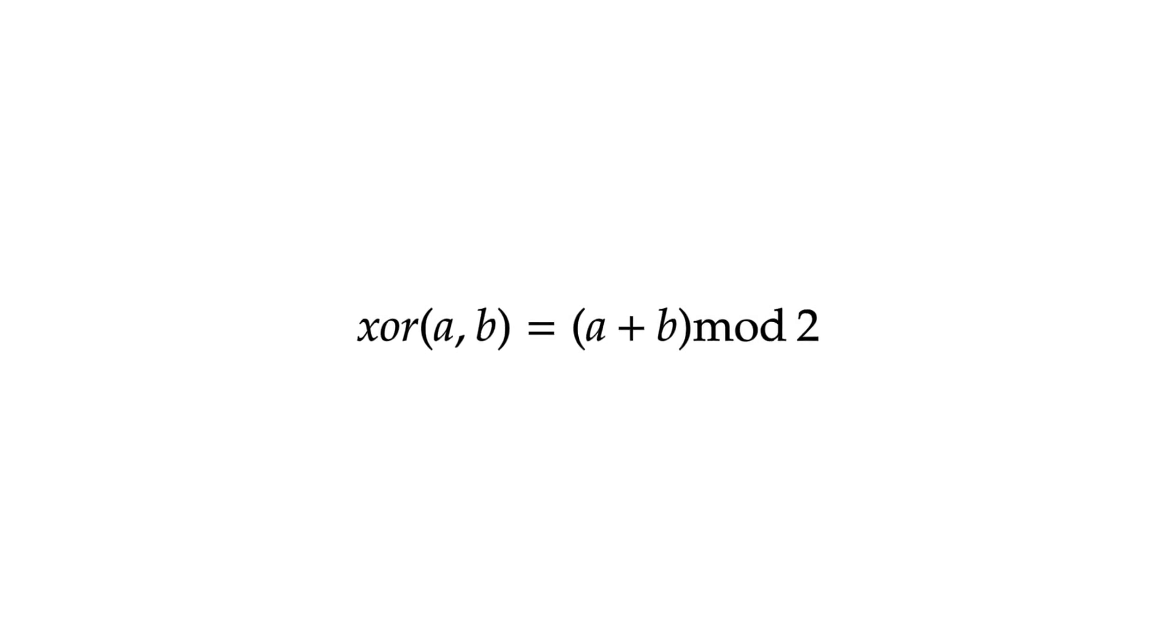Anyways, XOR gates are trivially simple, so let's make a network that actually does something impressive, like recognizing handwritten digits.